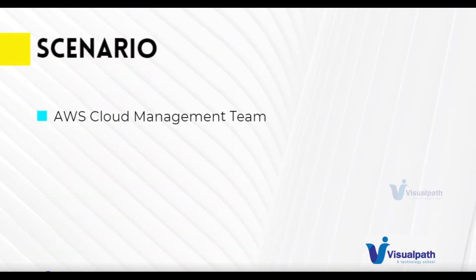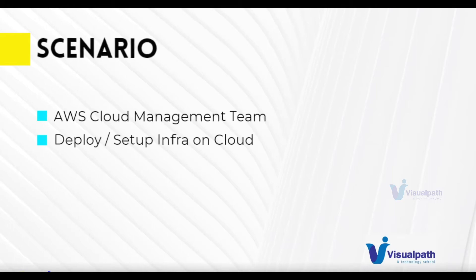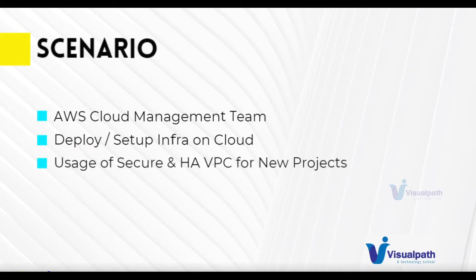You have an AWS cloud management team and their job is to deploy and set up infrastructure on the cloud. Any new project that comes in, this team is going to be in charge of setting up the infrastructure and deploying the stack on the cloud, making all the regular changes as and when required. Before we implement any project on AWS cloud, we ideally set up a VPC.